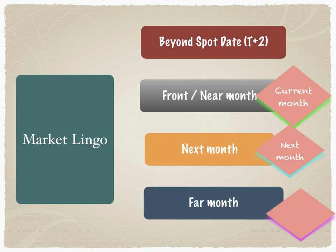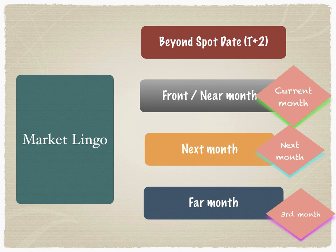The far month is the third month beyond the present month, so expiry happens three months out. Many markets also issue futures up to one year, but those are not as liquid as the near month. Among near month, next month, and far month, the maximum trading volume and activity takes place in the near month. There is very high liquidity in the near month compared to the far month.